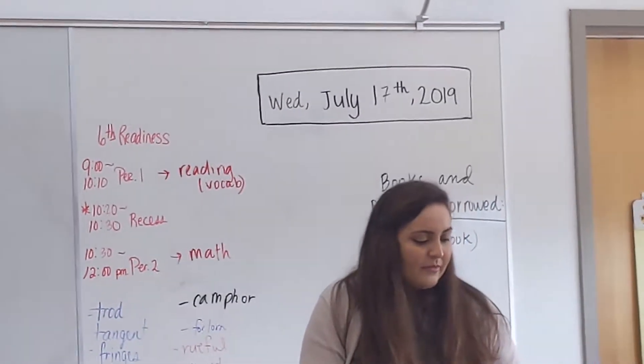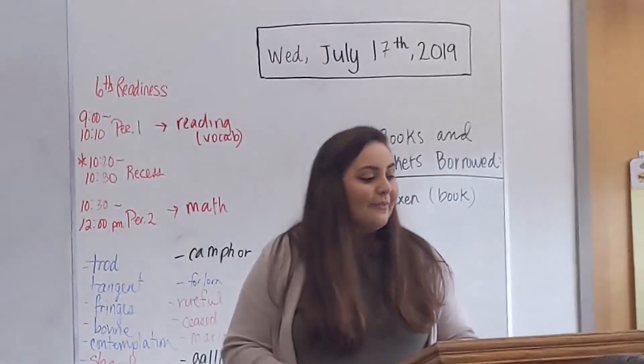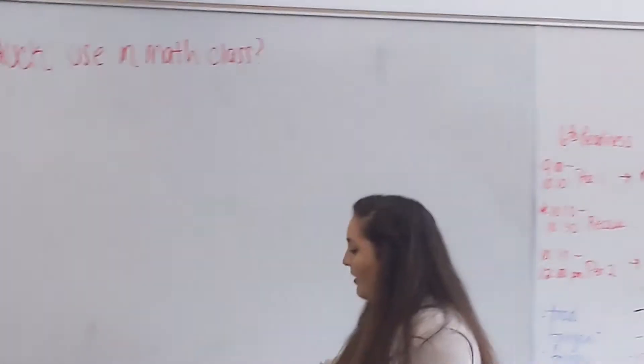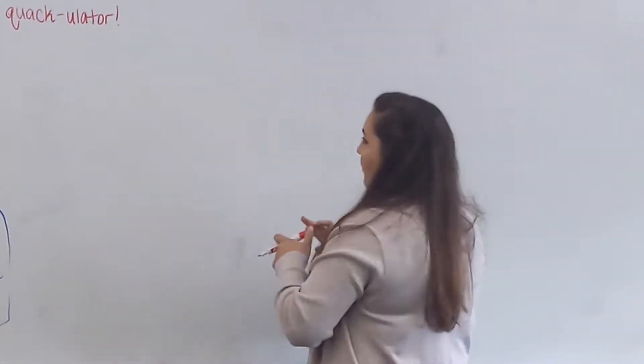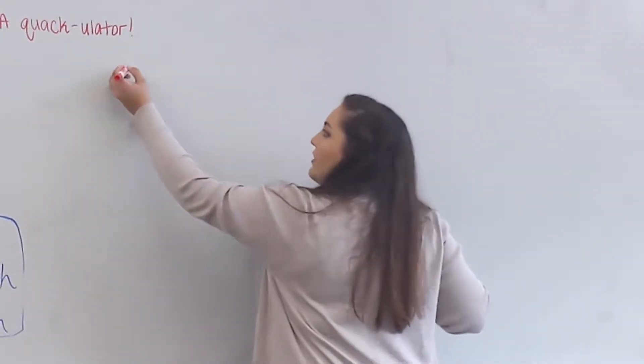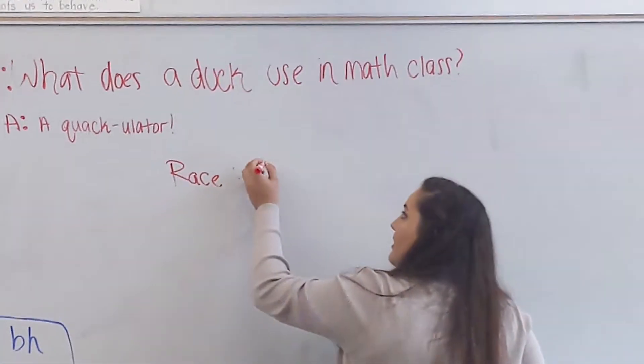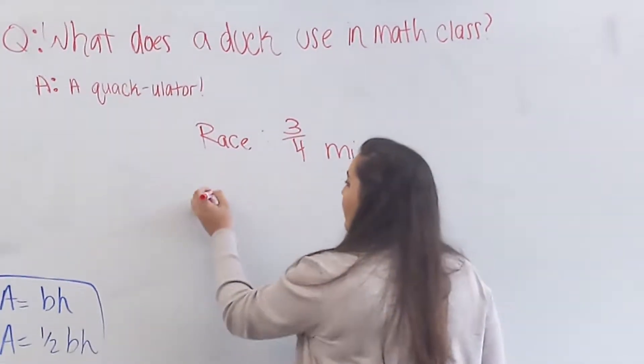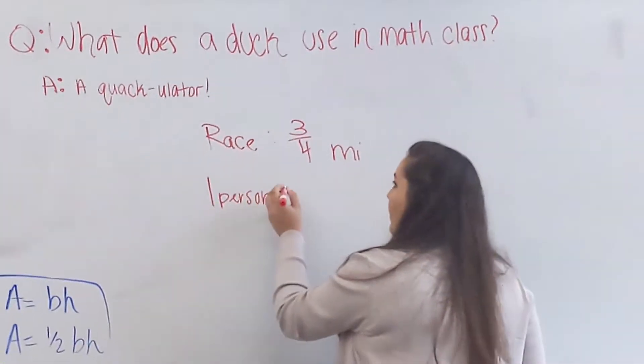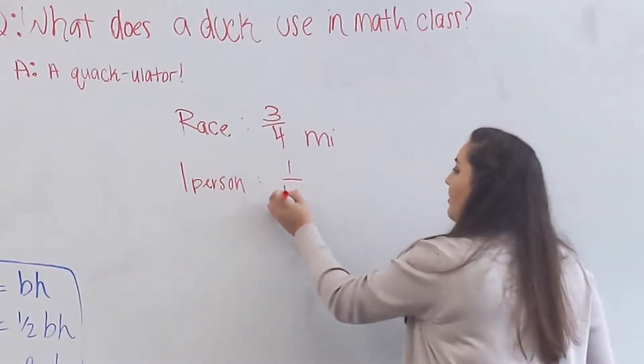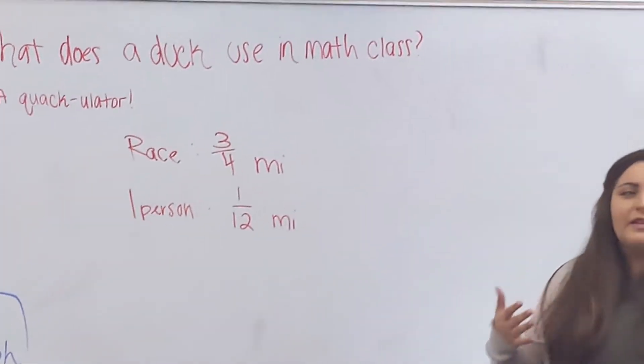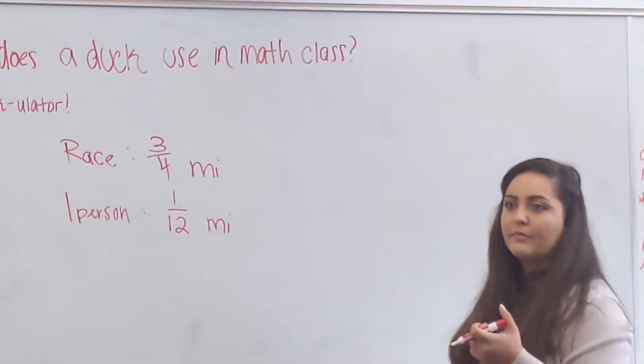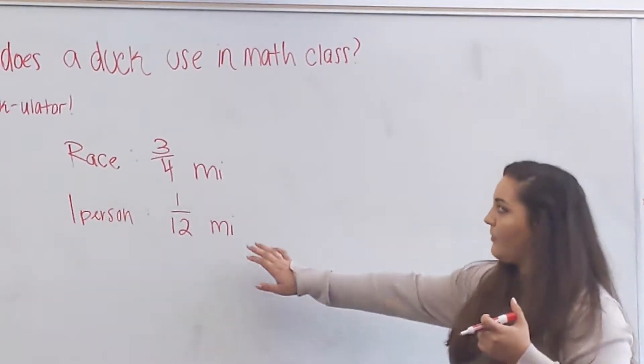We have some pieces of the puzzle right now. We know that the total of the race was three quarters of a mile long. We know that each person, one person, ran a twelfth of a mile. Does anybody have an idea of how to solve this problem?